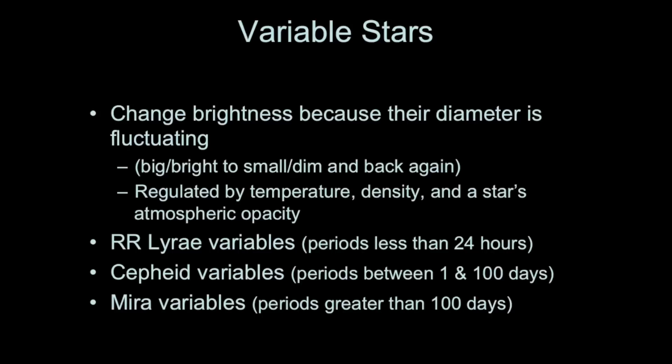There are three types of variable stars a red giant might become: RR Lyrae variables, Cepheid variables, and Mira variables, classified by the period of their variability. RR Lyrae variables have periods of less than 24 hours. Cepheid variables range from 1 to 400 days. Mira variables have very long periods over 100 days. Variable stars have properties useful to astronomers in determining distances, which will be covered in another video.